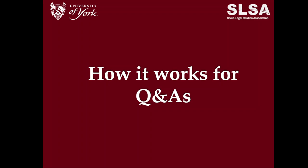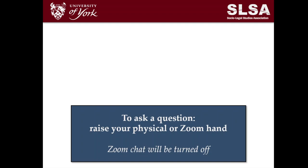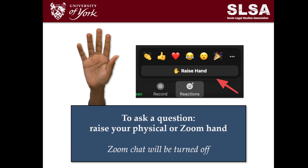For Q&As and discussion sessions, the principle is simple: to ask a question you raise your physical or Zoom hand and can then be called on by the chair. Zoom chat will be turned off across all sessions, so you just raise your hand and are called upon to speak in order. If you're on Zoom you will mute and unmute to speak. We've decided against chat partly to keep things simple but also to reduce the burden on chairs, as managing both chat and an in-room discussion would be too much.